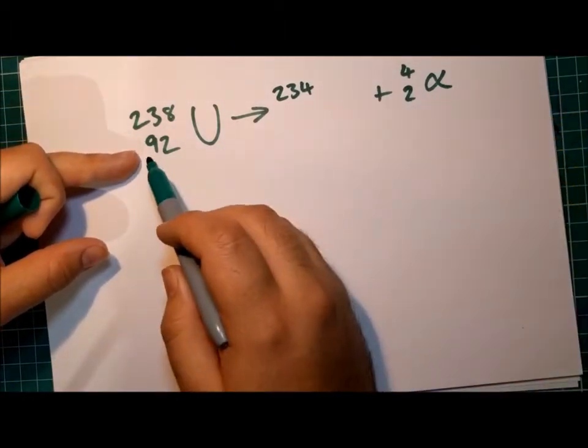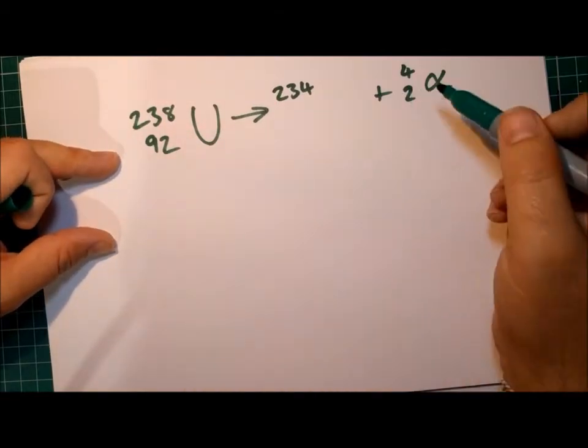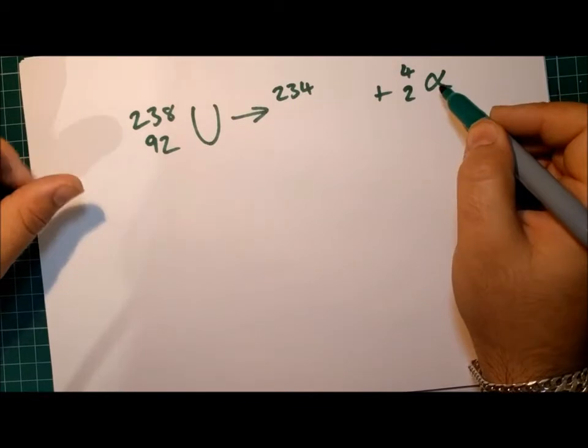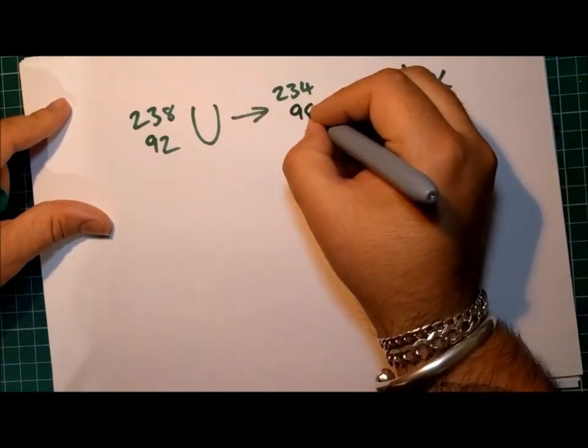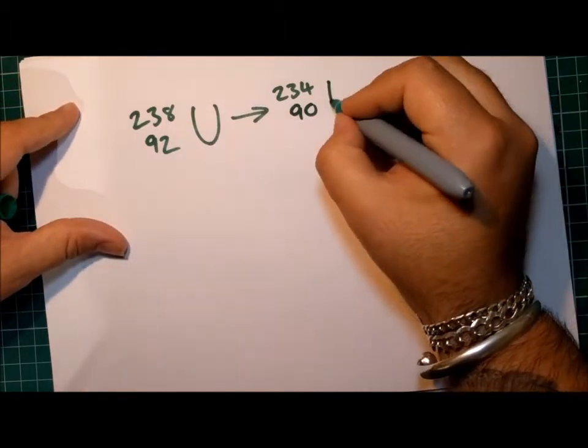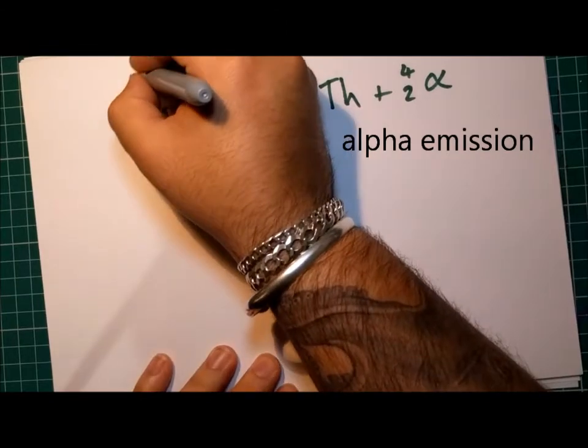And then we can think the same for the bottom row. Beforehand, we have 92 as an atomic number, 92 protons. And afterward, two of those protons are in the alpha particle. So what remains? Well, 90. And in this case, that forms thorium. Okay? So this is alpha emission.